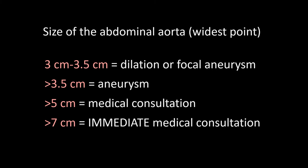One of the more common questions I get regarding abdominal aortic aneurysms is: how big is too big, and what should be done? This is what I use when writing reports: essentially 3.0 to 3.5 centimeters is big enough to call dilatation or a small focal aneurysm; over 3.5 centimeters is an aneurysm everyone will agree on.